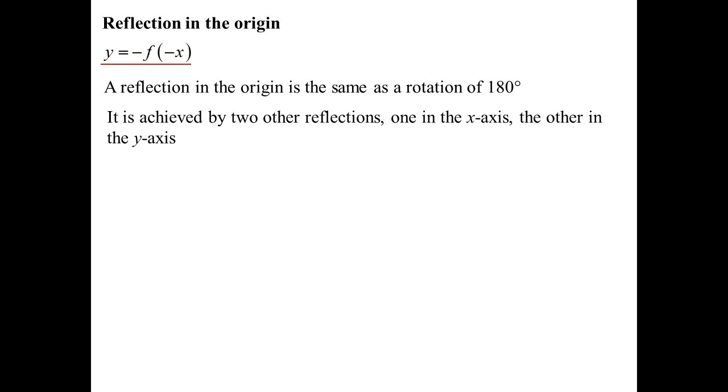Okay. Reflection in the origin. That's essentially rotation. It has both the y being negative and the x being negative as well. So y equals minus function minus x. So rotation in the origin, or rotation 180 degrees, is the same as just doing two reflections. One in the x-axis, one in the y-axis. Let me show you.